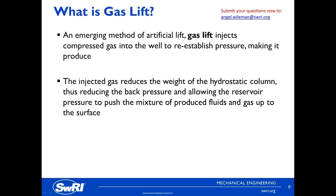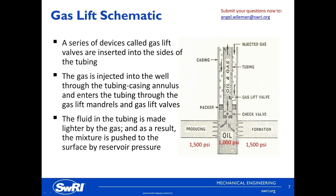Gas lifted wells are equipped with side pocket mandrels and a series of gas injection valves. This arrangement allows for gas injection deep in the tubing. The injection of the gas into the fluid stream reduces the fluid density, lowers the bottom hole pressure, and as the gas rises, the bubbles help push the oil to the surface. The degree of this lift effect depends on whether the gas injection is continuous or intermittent, and whether the gas is injected at a single point below the fluid or supplemented by multipoint injection along the tubing stream.